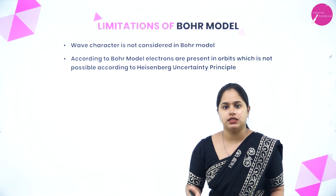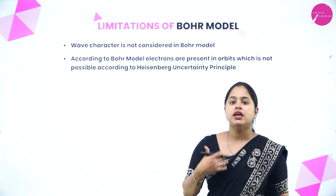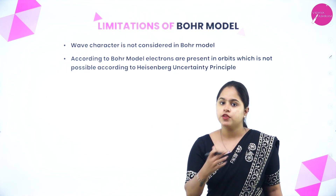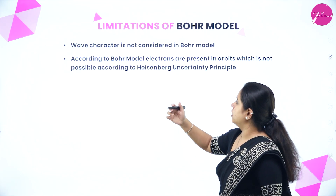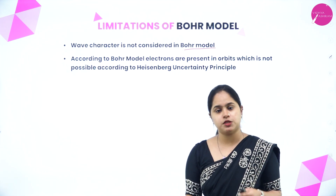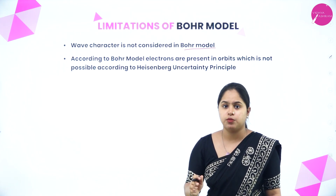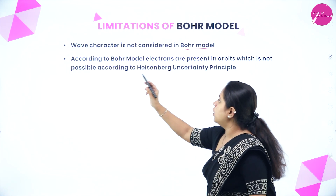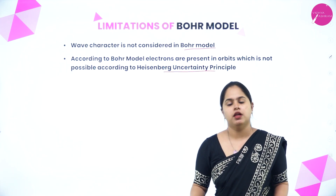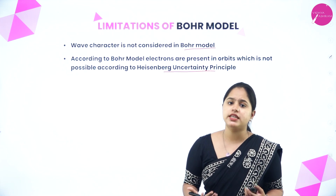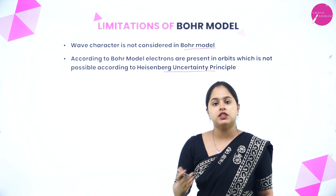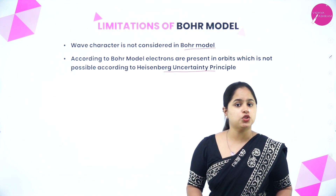From Heisenberg's uncertainty principle and the dual nature of matter, certain limitations arose for Bohr's model. First, the wave character of matter is not considered in Bohr's model. Second, according to Bohr, electrons are present in orbits, which is not possible according to Heisenberg's uncertainty principle. These limitations led to the quantum mechanical model of atom.